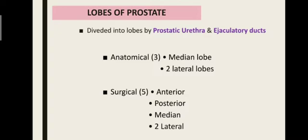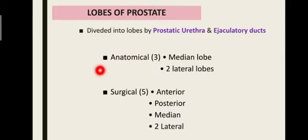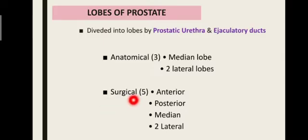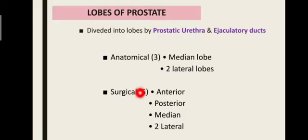Coming to the lobes of the prostate gland, the lobes are divided by the prostatic urethra and ejaculatory duct, and the classification is of two types: anatomical and surgical. Anatomically, you have three lobes — a median lobe and two lateral lobes. Surgically, it has five lobes: anterior lobe, posterior lobe, median lobe, and two lateral lobes. The surgical lobes are more important because they have clinical relevance, so you need to remember the surgical lobes.